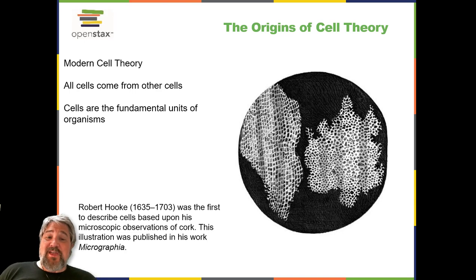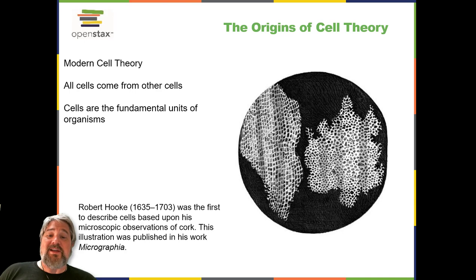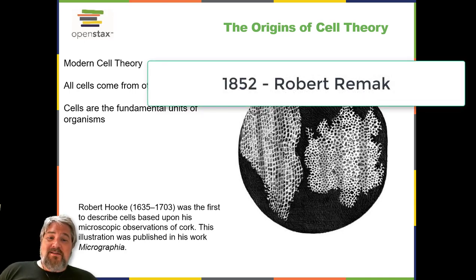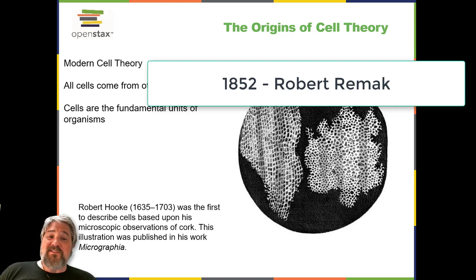This laid the foundation for the idea that cells are the fundamental components of plants and animals. In the 1850s, two Polish scientists living in Germany pushed this idea further, culminating in what we recognize today as modern cell theory. In 1852, Robert Remack (1815–1865), a prominent neurologist and embryologist, published convincing evidence that cells are derived from other cells as a result of cell division. However, this idea was questioned by many in the scientific community.